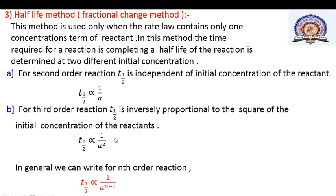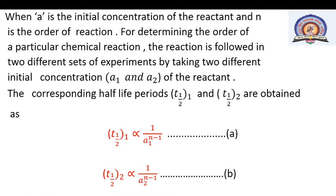For a first order reaction, t½ = 0.693/k₁. In general, for an nth order reaction, t½ is proportional to 1/aⁿ⁻¹, where a is the initial concentration of the reactant and n is the order of reaction.